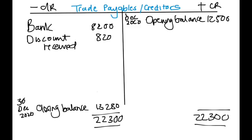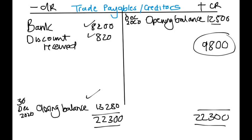We take the total of 22,300 and deduct the opening balance of 12,500 to find the difference, which represents credit purchases. So: 8,200 plus 820 plus 13,280 minus 12,500 gives us 9,800. This 9,800 is your credit purchases.